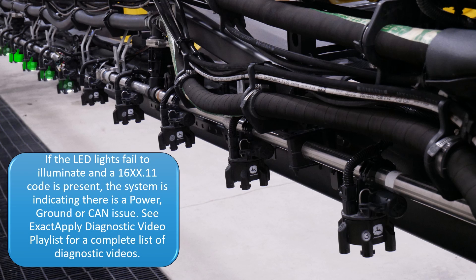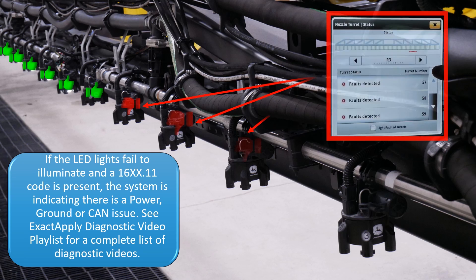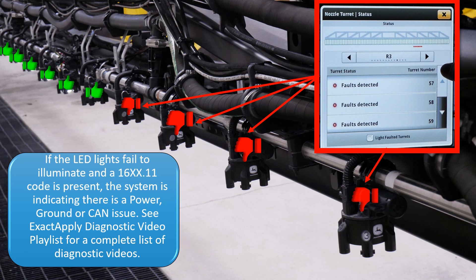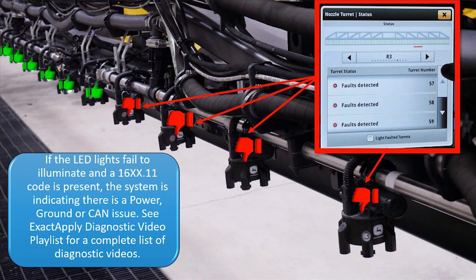The LED lights are commanded on via CAN messaging and powered with battery voltage. If the LED lights fail to illuminate and a 16.11 code is present, the system is indicating there is a power, ground, or CAN issue. For faulted nozzles that do not illuminate, see Exact Apply Diagnostic Video MNA 16.09 Overview.